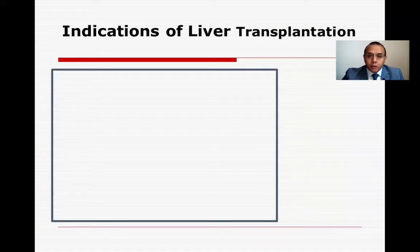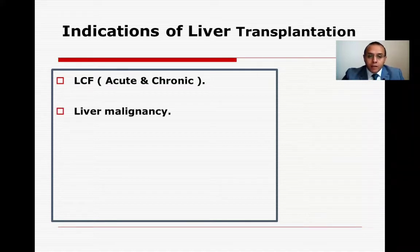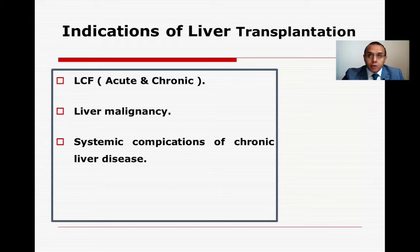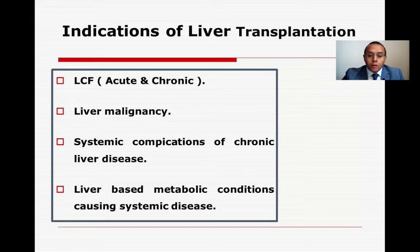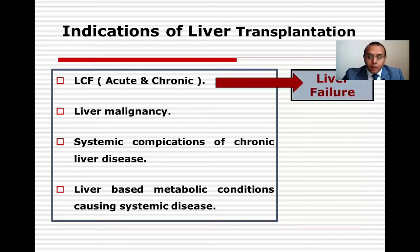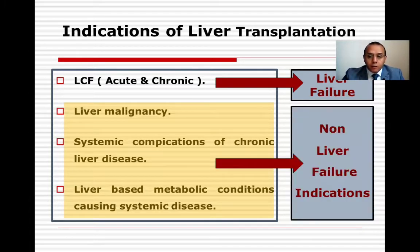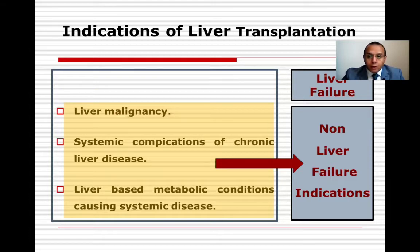The classification of indications for liver transplantation includes: liver cell failure (acute or chronic), liver malignancy, systemic complications of chronic liver disease, and liver-based metabolic conditions causing systemic disease. The first category is liver failure, and the other three categories are the non-liver failure indications for liver transplantation. We will now focus on those non-liver failure indications.